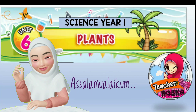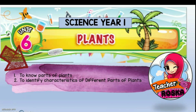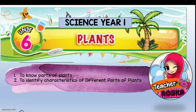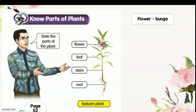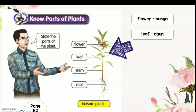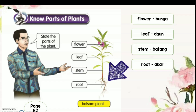Hi, assalamualaikum. Our topic today is from Unit 6: Plants. First, to know parts of plants. Second, to identify characteristics of different parts of plants. Let's start. State the parts of the plant — nyatakan bahagian pada tumbuhan: flower (bunga), leaf (daun), stem (batang), and root (akar).